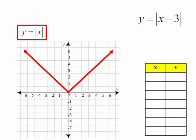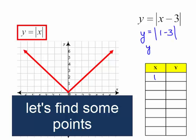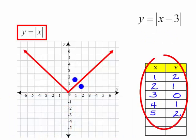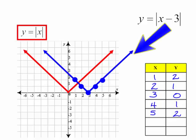y equals the absolute value of x minus 3. I'm going to plug in some numbers. If I plug in 1, I will get y equals the absolute value of 1 minus 3. y will equal the absolute value of negative 2, which is just 2. I'm going to continue plugging in numbers. And now I'm going to graph them: 1, 2; 2, 1; 3, 0; 4, 1; 5, 2. This is the graph y equals the absolute value of x minus 3.